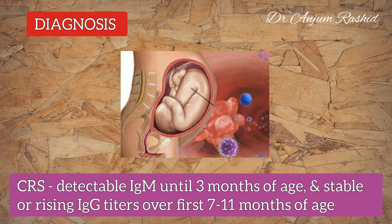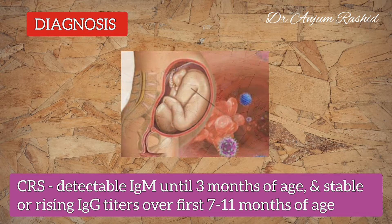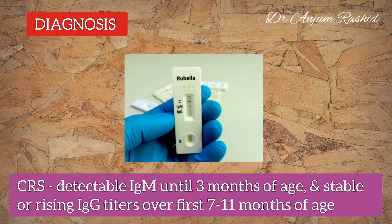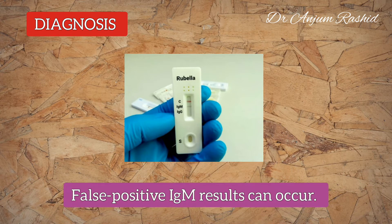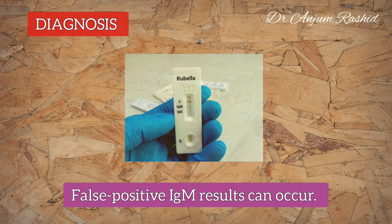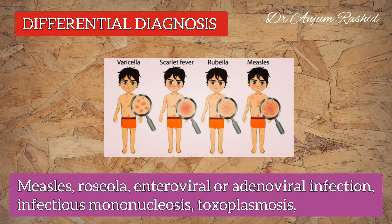Diagnosis can also be made by a fourfold or greater increase in specific IgG antibodies in paired acute and convalescent serum. Congenital rubella syndrome cases can have detectable IgM antibodies until three months of age and stable or rising IgG titers over the first seven to eleven months of age. False positive IgM antibody results may occur in some cases.